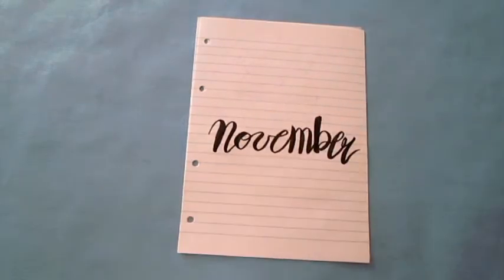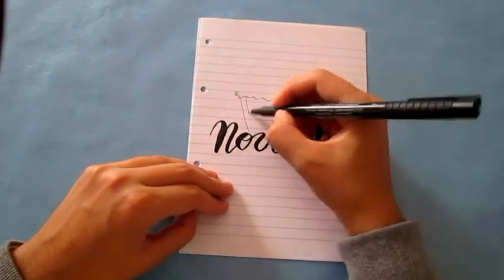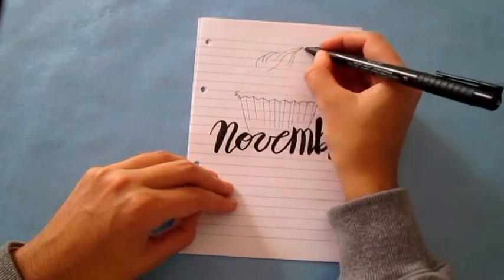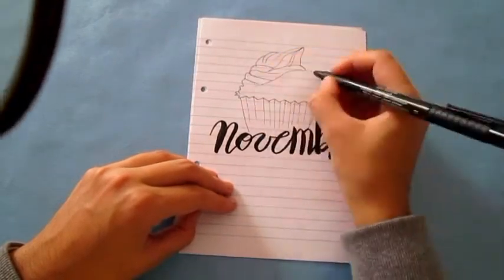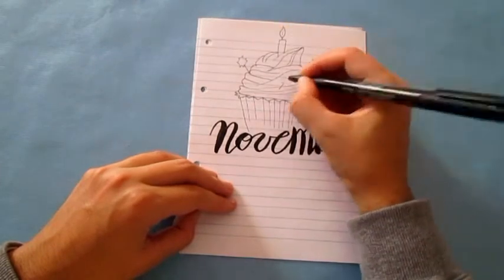In the first page I drew a giant cupcake with a candle which I'll color later because I had to film before it gets dark outside and I used all the natural light as possible. I write the word November using a black brush pen.